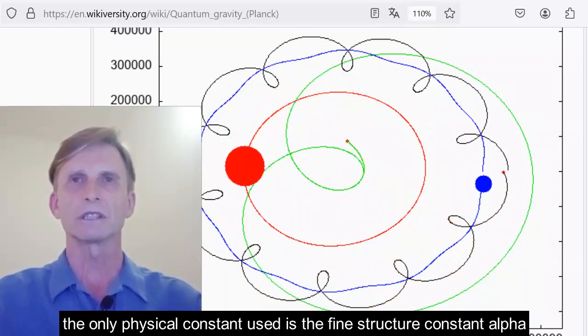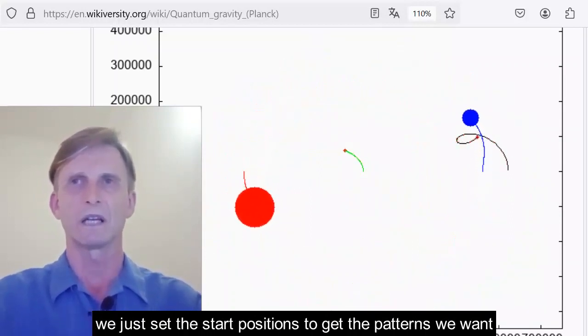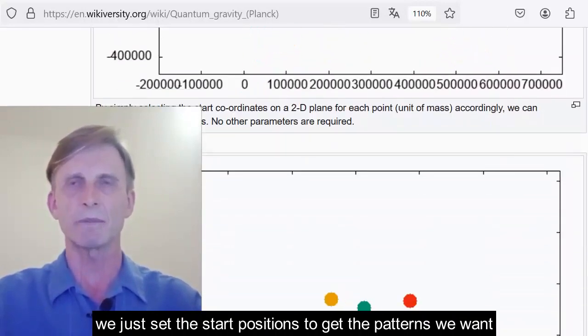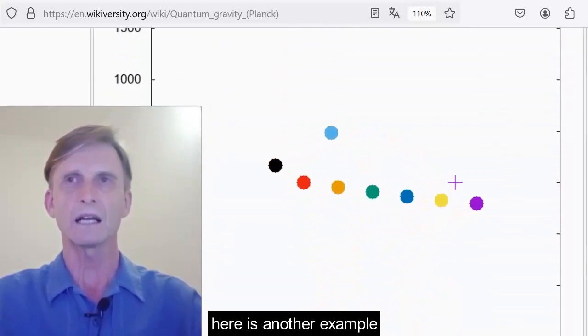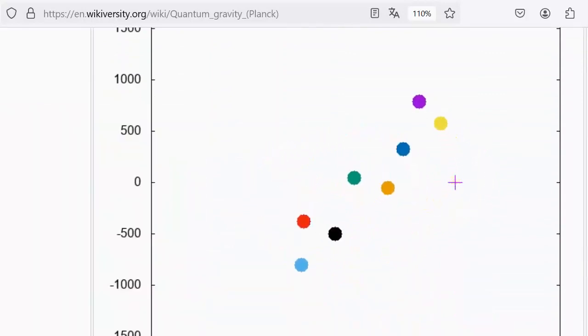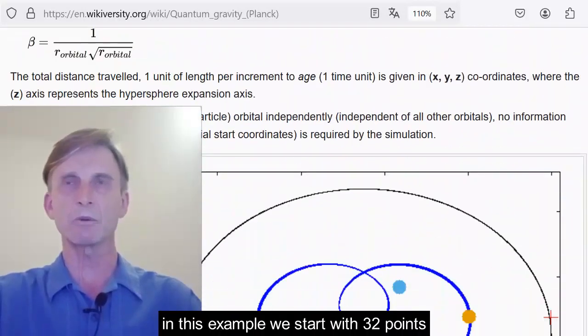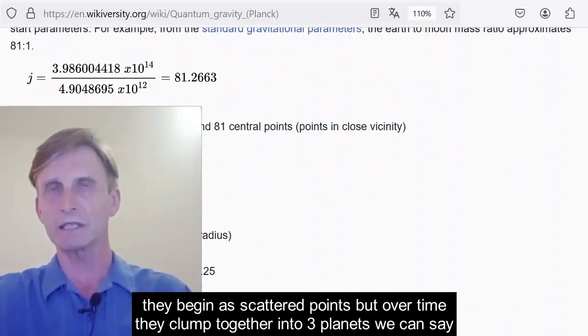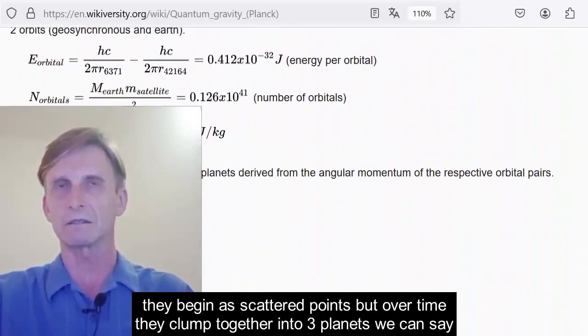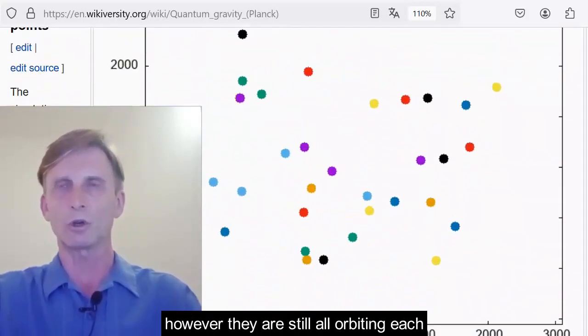The only physical constant used is the fine structure constant alpha. We just set the start positions to get the patterns we want. Here is another example. In this example, we start with 32 points. They begin as scattered points, but over time they clump together into three planets, we can say. However, they are still all orbiting each other.